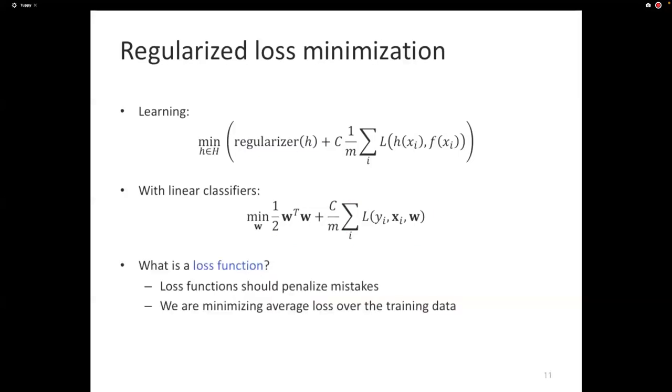And then you can have any loss function. But what about the loss function? The loss function can penalize. Its job is to penalize mistakes. And we are minimizing the average loss. What's the best loss function? What's the ideal case? If no other concern existed, what loss function you need to use for classification if the only thing that matters is accuracy?